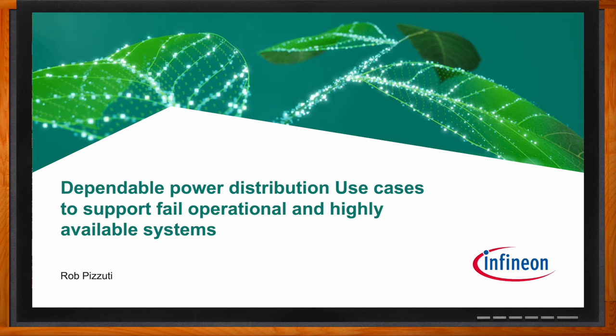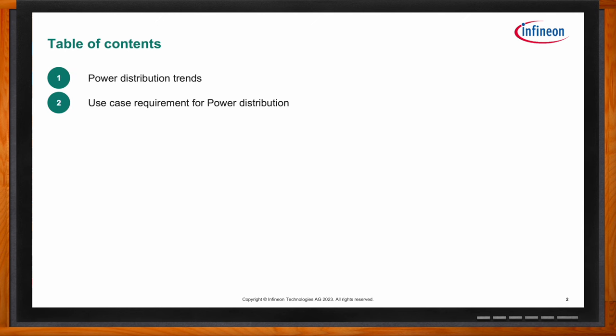But Rob, before we get started, what end markets does dependable power distribution apply to? Well, we're largely talking about automotive and transportation markets where you're dealing with cars or trucks that have ADAS features or autonomous drive features. But potentially these concepts could also be applied to safety systems where you have to maintain user or area safety for robots or something like that.